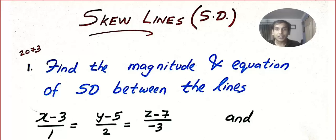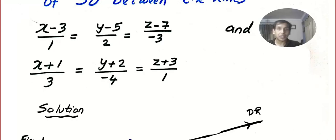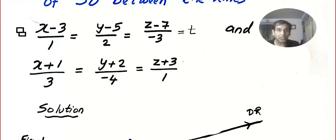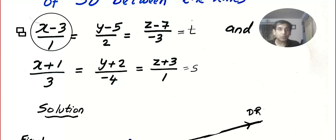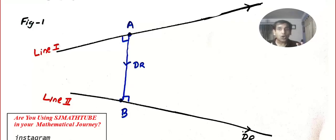From the mark scheme point of view, Tribhuvan University asked this question in 2073. So let's start — are you ready with pen, paper, and calculator? This is Case 1, where both equations are given in symmetric form. I'm going to call the first one equal to t and the second equal to s as the parameters, and I can easily convert these into parametric form.